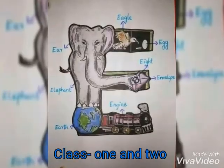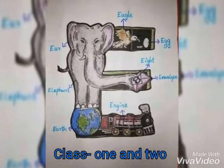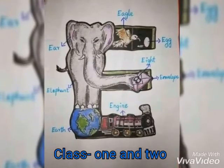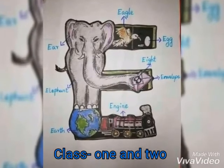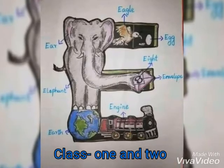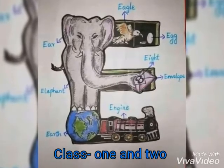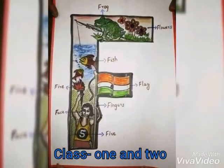E for egg, egg means dim. E for elephant, elephant means hati.